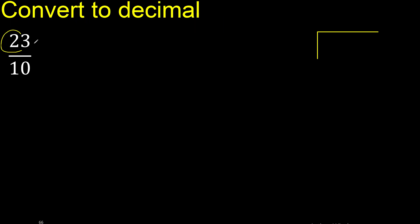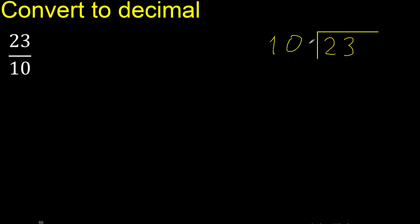23 divided by 10. 23 is not less than 10, therefore 10 multiplied by which number is nearest to 23 but not greater? Multiply by 3 is 30, therefore multiply by 2 is 20. Subtract: remainder is 3.